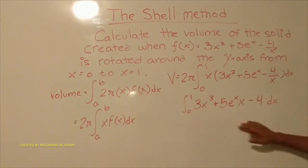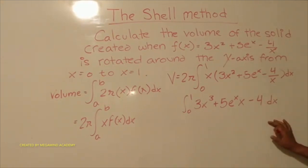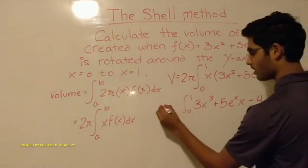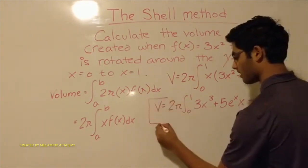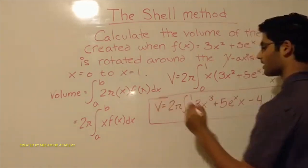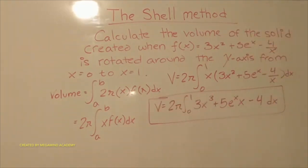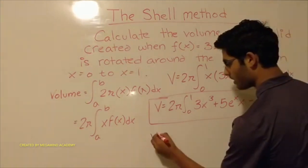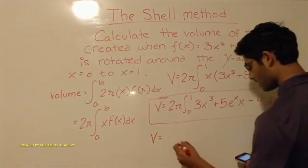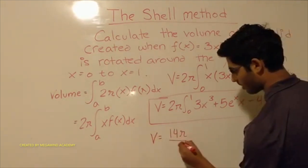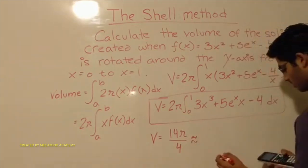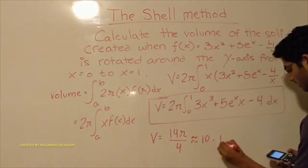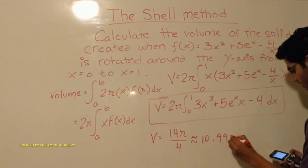From here, you can plug this into the calculator and then multiply by 2π. When I plug this into my calculator, I get the volume is equal to 14π/4, which is approximately 10.9956.